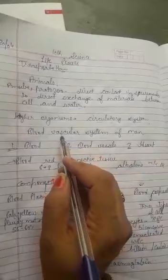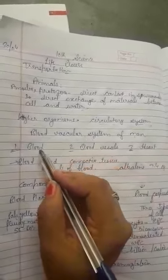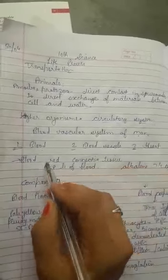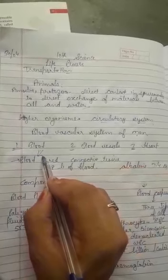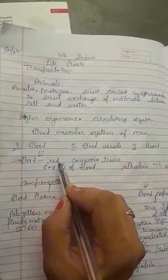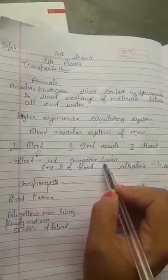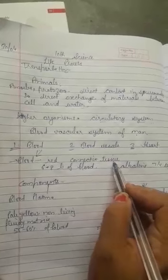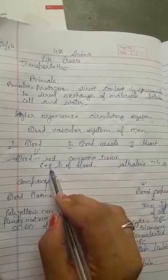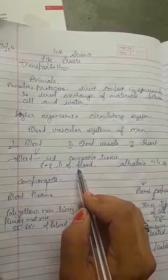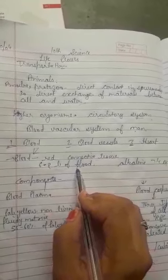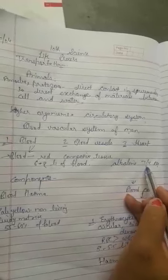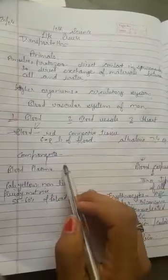The blood vascular system of man has three main parts: blood, blood vessels, and heart. What is blood? Blood is the red vascular connective tissue, 6 to 8 liters of blood in human body, and its nature is alkaline with pH 7.4. Blood has two components: blood plasma and blood corpuscles.